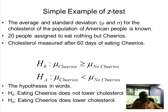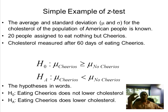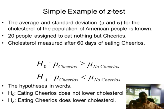This is a one-tail test because Cheerios wants to demonstrate that it lowers cholesterol. It makes more sense to think about the alternative hypothesis first: the average cholesterol after eating Cheerios will be less than the average cholesterol of the population that has not eaten Cheerios. The null hypothesis must include every other possible outcome — that the mean cholesterol after eating Cheerios is higher than or exactly equal to the population average.